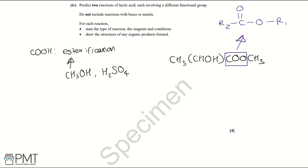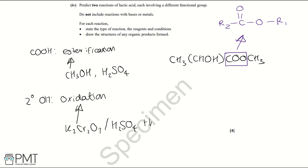The second reaction involves the secondary alcohol group, which undergoes oxidation. The reagents are potassium dichromate (K₂Cr₂O₇) and sulfuric acid, with heat as the condition. The secondary alcohol oxidizes to produce a ketone. You get marks for: correct reagents and conditions for esterification, correct organic product of esterification, correct reagents and conditions for oxidation, and the correct organic product for oxidation.